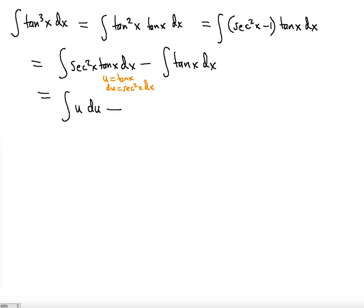Minus, and you can write the second integral as sin(x) over cos(x) dx. Then you're going to get (1/2)u² minus...